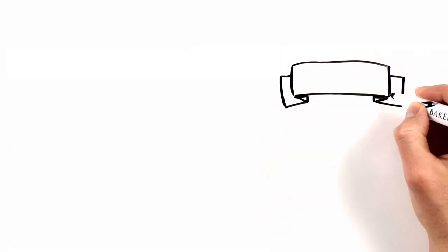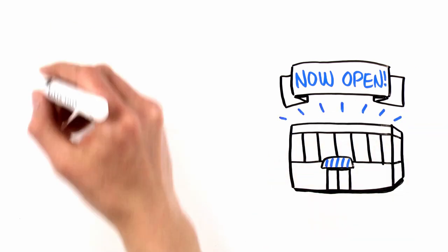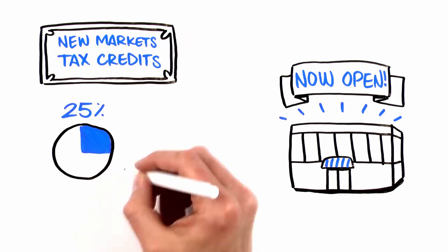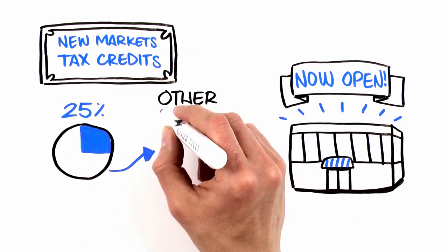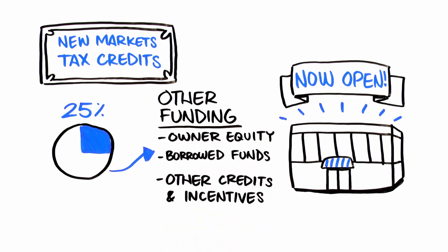As a rule of thumb, if you are building a new facility or expanding your operating business, New Markets Tax Credits can fund up to 20-25% of your project and must be paired with other funding sources, including owner equity, borrowed funds, and other credits or incentives.